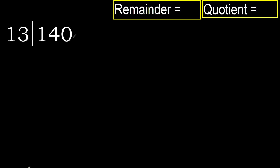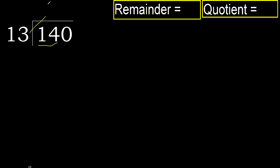140 divided by 13. 1 is less, therefore next. 14 is not less, therefore work with 14. 13 multiplied by which number is nearest to 14, but not greater?